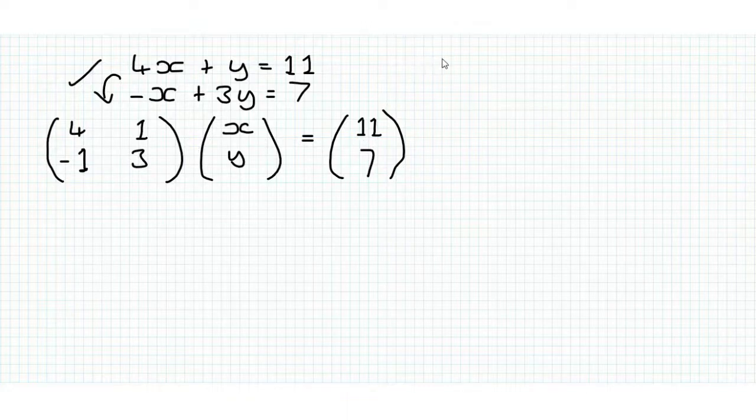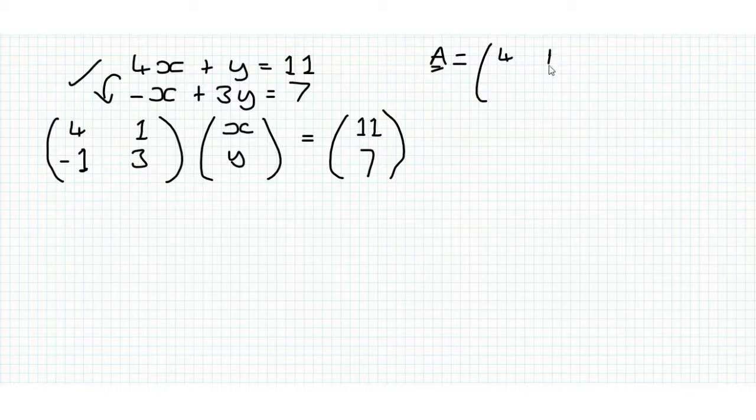So what we're going to do is we're going to call that matrix A at 4, 1, minus 1, 3 and now we're going to find A inverse.